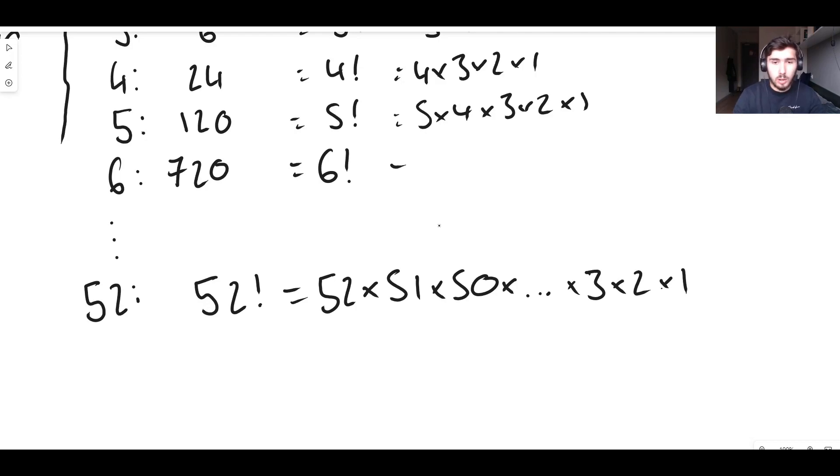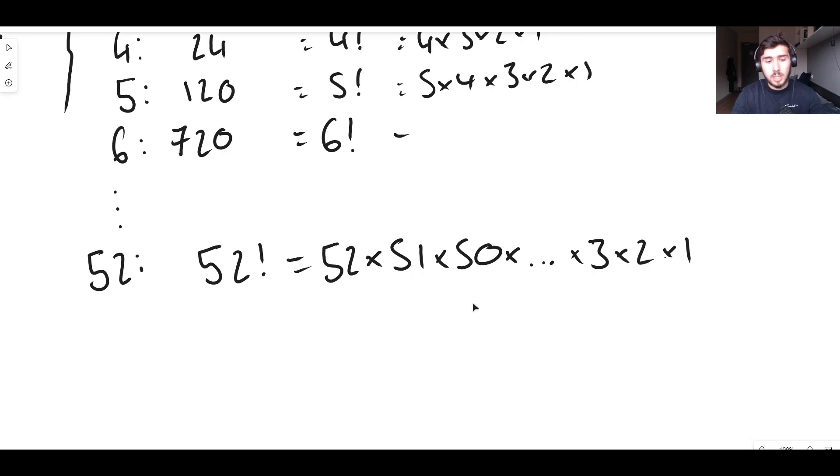So 52, 51, 50, 49, 48, all the way down until we get to 1. Timesing all of them together. This number is incomprehensibly large.